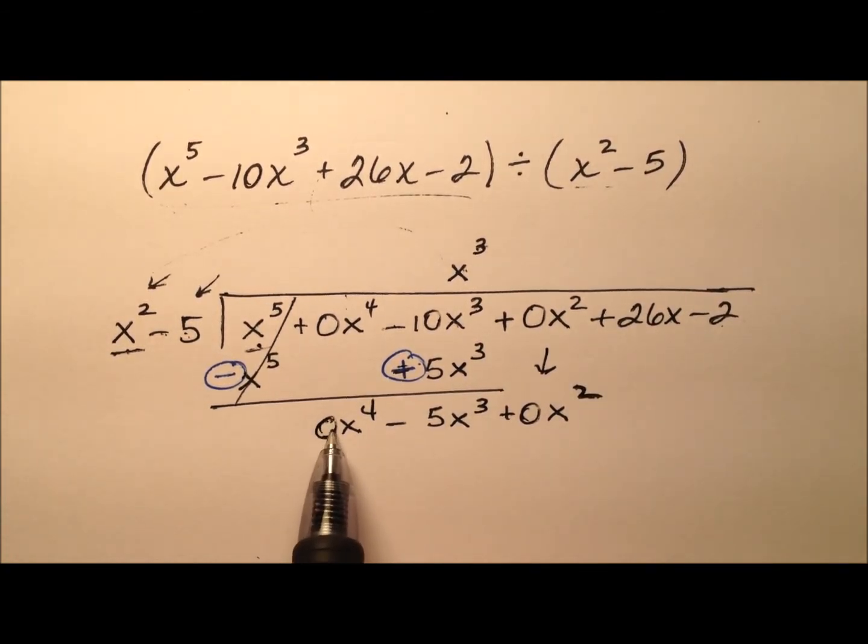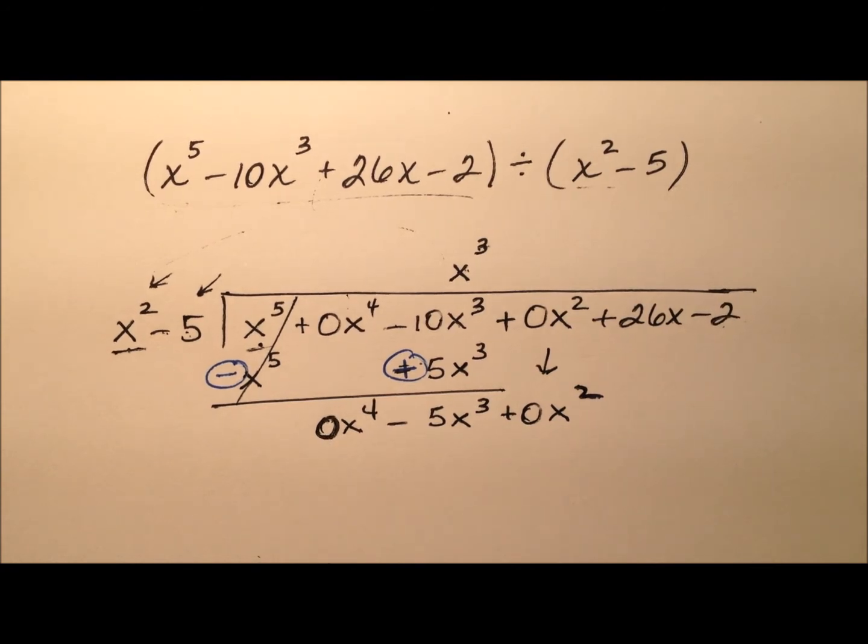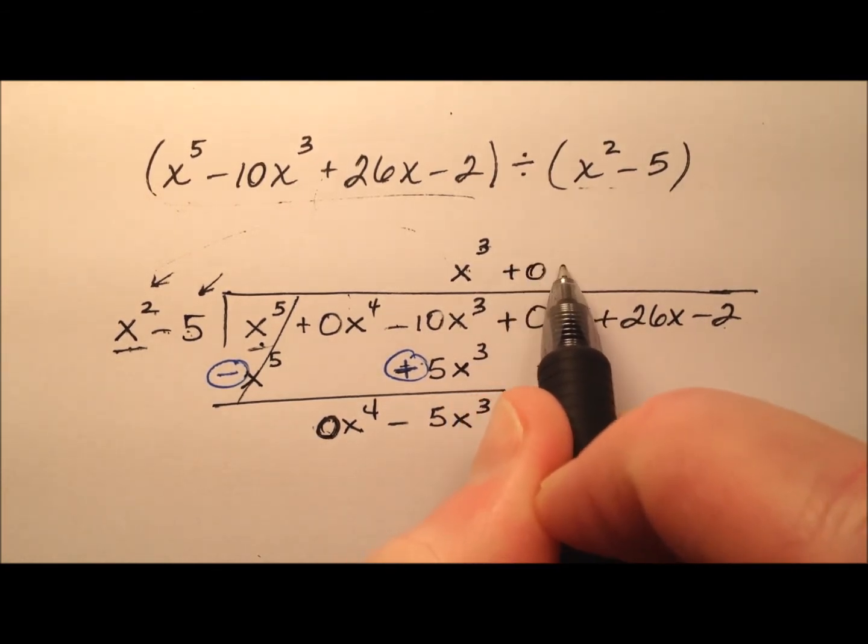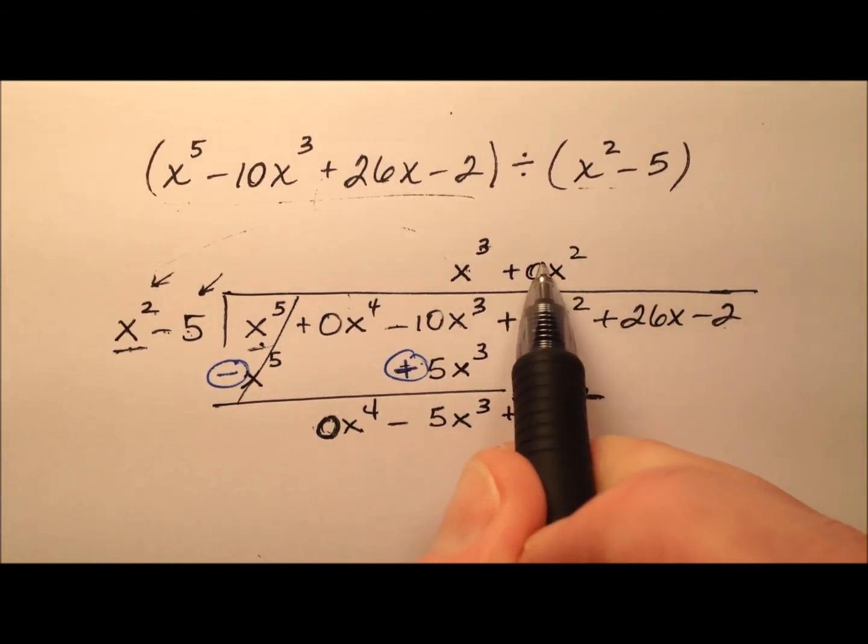Okay here's an interesting situation we have a zero right here. So what do I have to multiply by x squared to get zero? Well zero right? So and this zero will actually go right here, zero x squared.